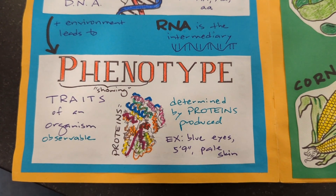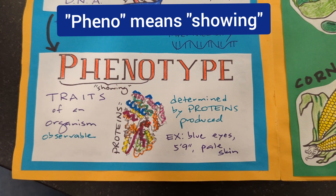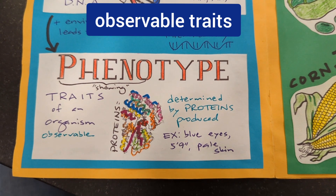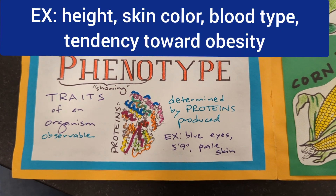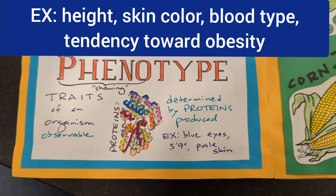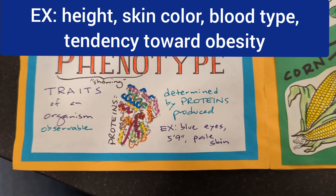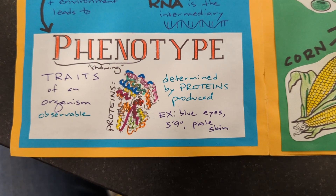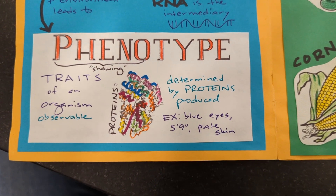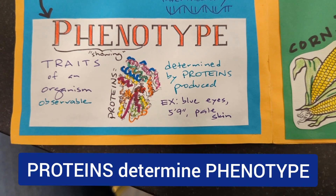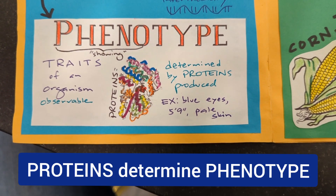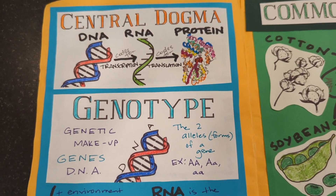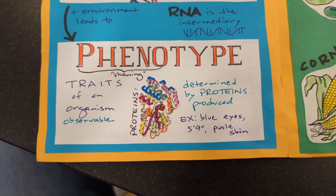Phenotype — it's important you know the root. 'Pheno' means showing. Your phenotype is your observable traits. Sometimes these are physical traits like your height, skin color, eye color, or hair type. But they can also be things like personality traits, blood type, or what kind of muscle fibers you predominantly have. Regardless, phenotype is all determined from your proteins — the proteins produced from your DNA, as affected by your environment, determine your phenotype.